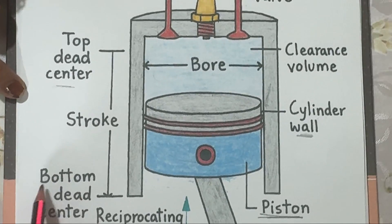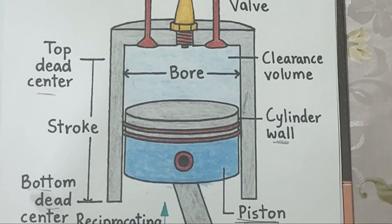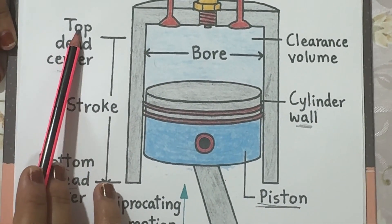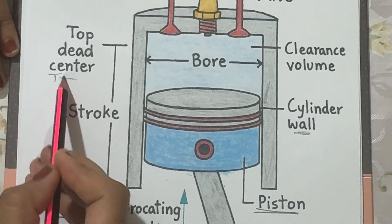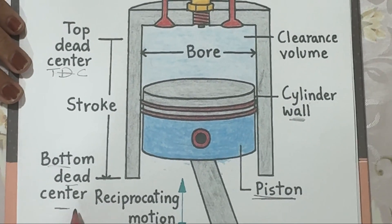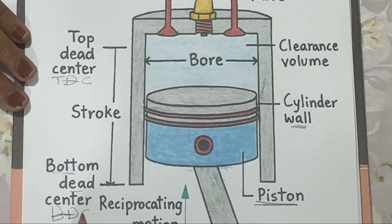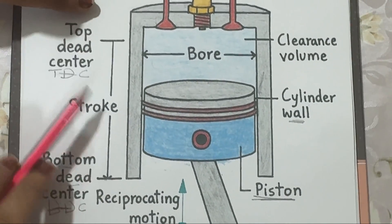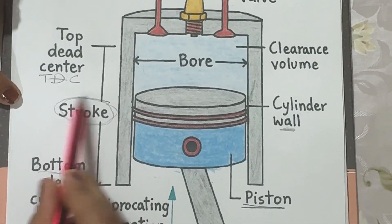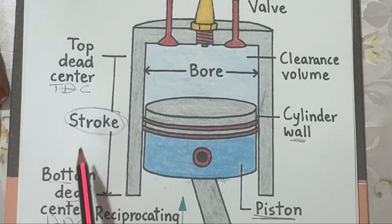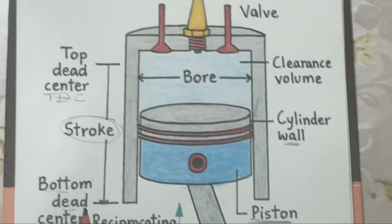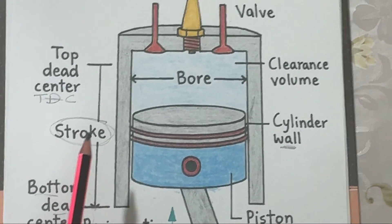Top dead center and bottom dead center: when the piston is at its highest point, it's called top dead center, or TDC. When it's at its lowest point, it's called bottom dead center, or BDC. The distance the piston travels between these two points is known as the stroke. A longer stroke means more torque; a shorter stroke allows higher RPM — revolutions per minute. So the stroke length determines how the engine behaves: more power or more speed.